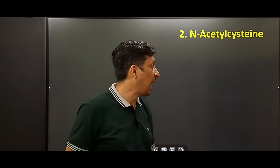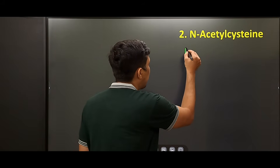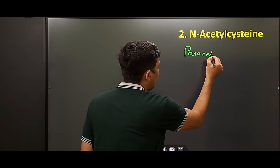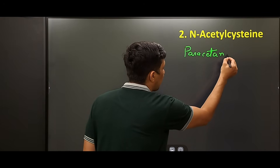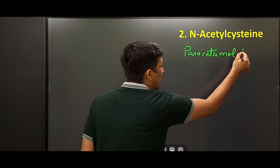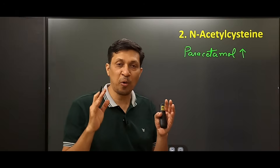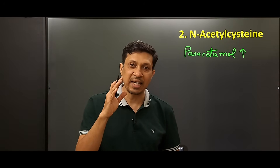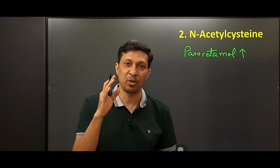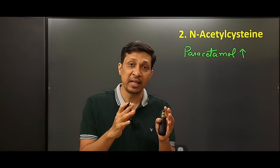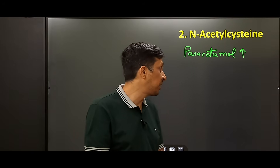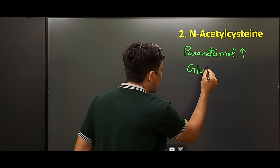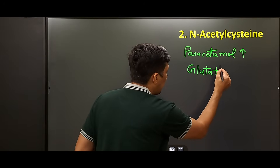Paracetamol is the most commonly overdosed drug in the world. N-acetylcysteine helps in paracetamol toxicity by preventing liver injury, because it restores glutathione levels.